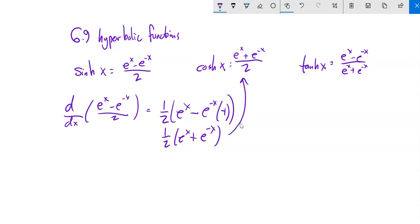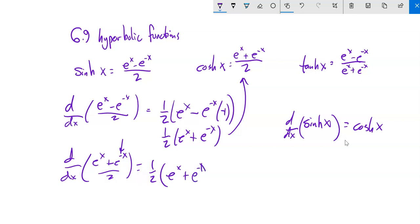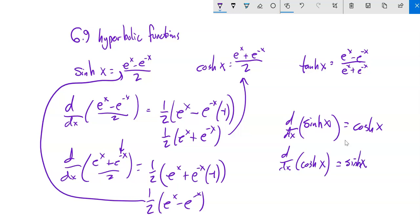Which if I distribute that negative back into there, notice is cosh. So the derivative of sine h is cos h. And I could do something similar with cosine. The derivative of cosh is sine h. So they're each other's derivatives. And if you look at graphs of them both, you'll see why they are.